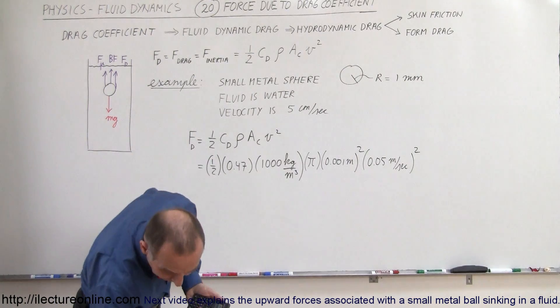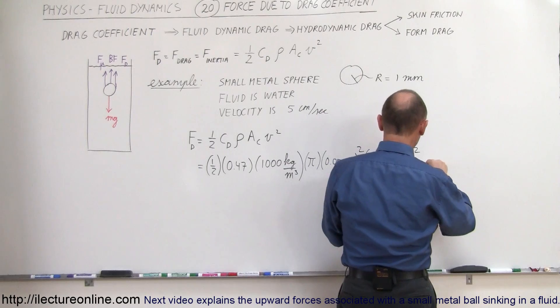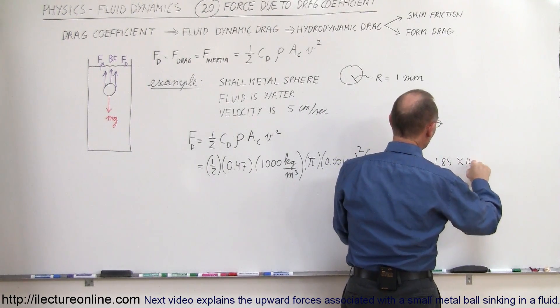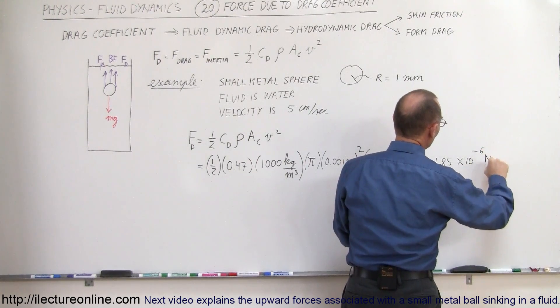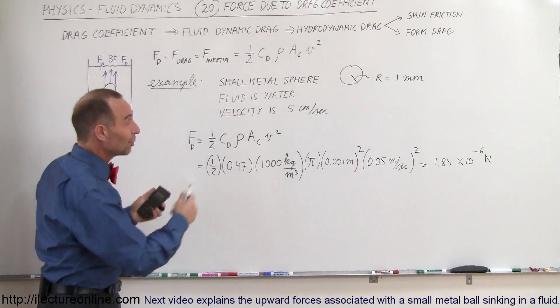Let me put on my glasses so I can see what I'm doing here. Alright, so the force would be equal to 1.85 times 10 to the minus 6 newtons. Now let's check the units and make sure that the units do come out to newtons.